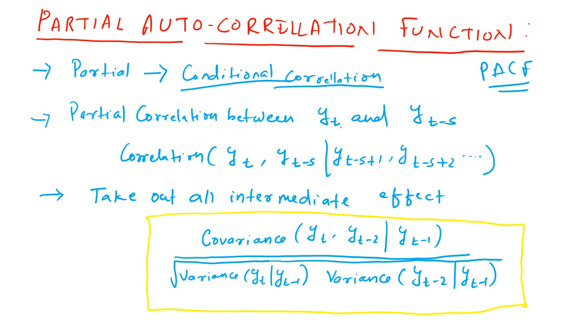So, let us say there are two time series with us, yt and yt minus s. So, yt minus s is nothing but the s lag of yt. So, there will be time series between them also, yt minus 1, yt minus 2 up to yt minus s plus 1. So, a simple correlation between yt and yt minus s is nothing but the correlation between yt and yt minus s.